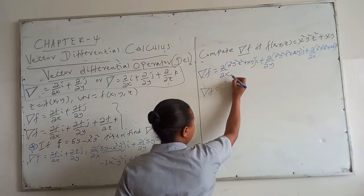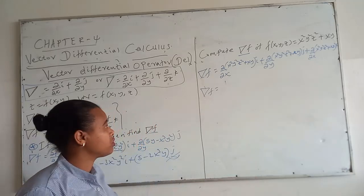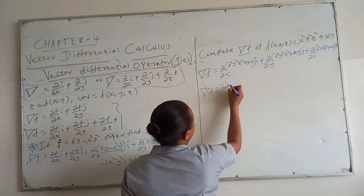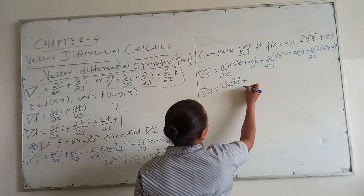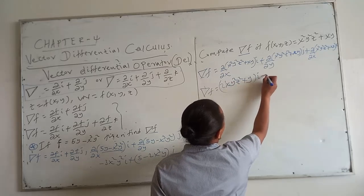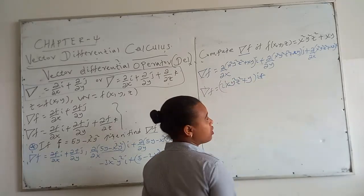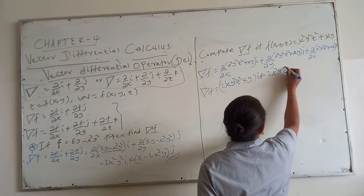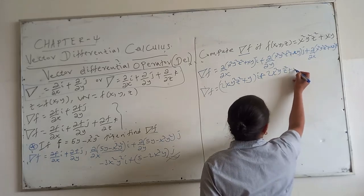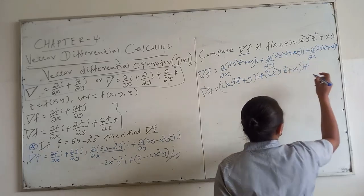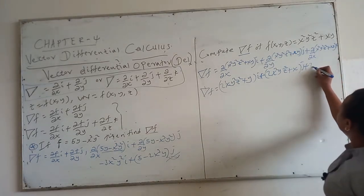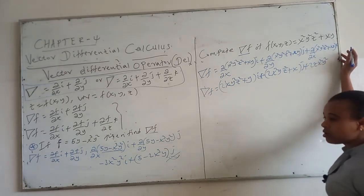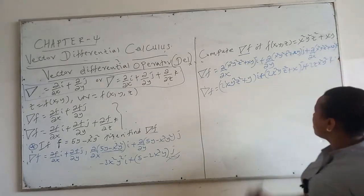Del of f equals: the partial derivative with respect to x gives 2xy²z² + y in i; the partial derivative with respect to y gives 2x²yz² + x in j; and the partial derivative with respect to z gives 2x²y²z in k.